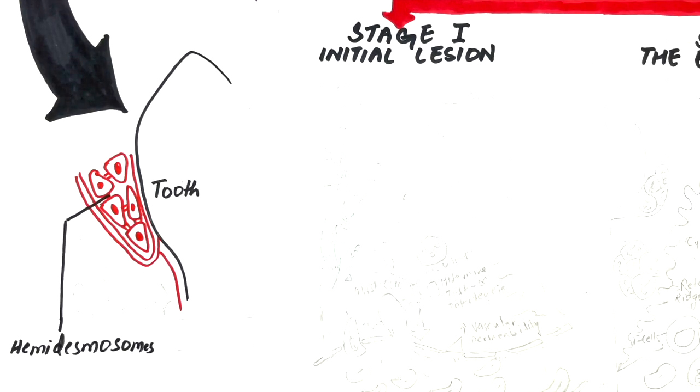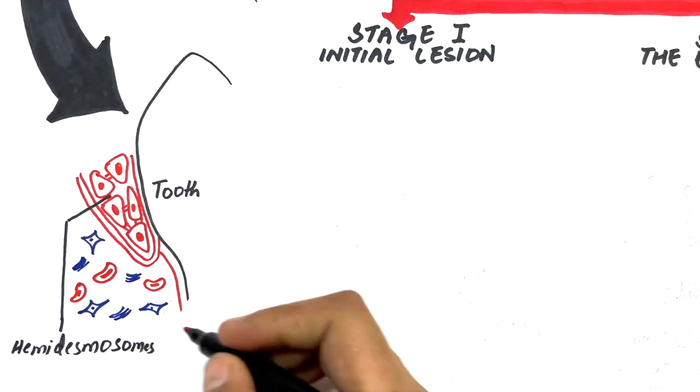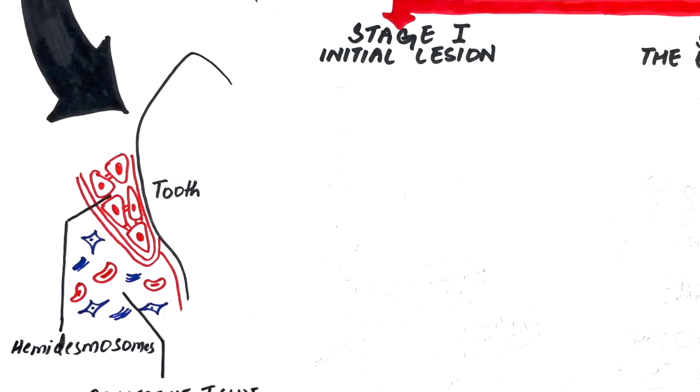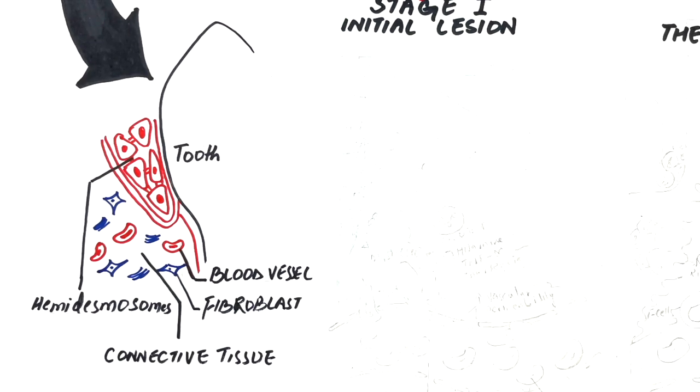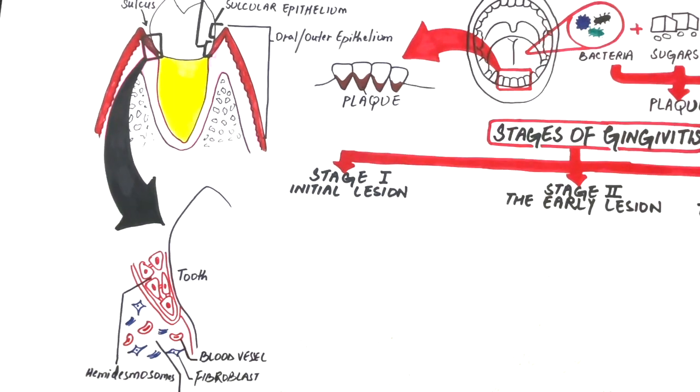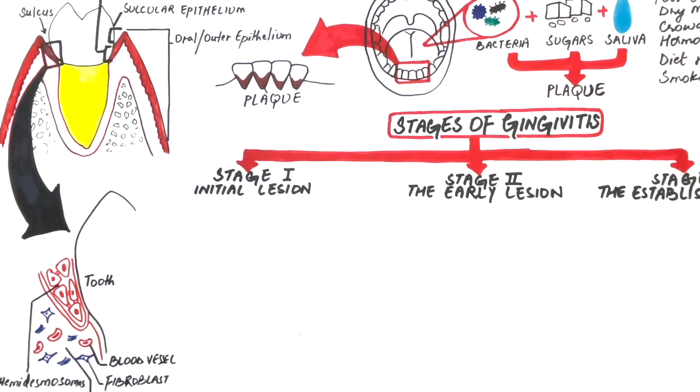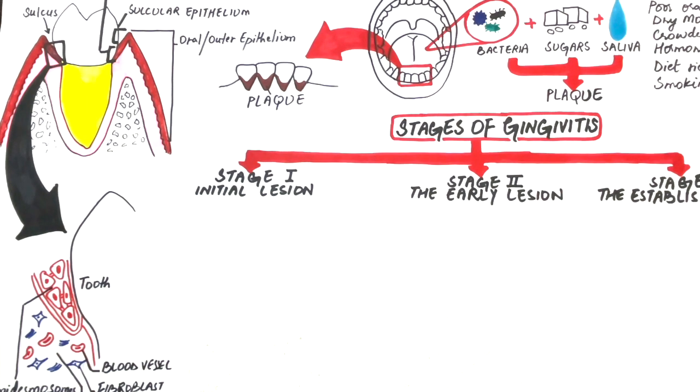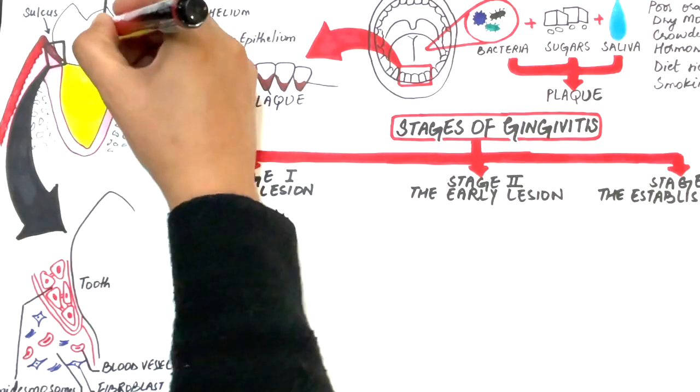Hemidesmosomes in the junctional epithelium possess wider intercellular junctions, hence allowing movement of bacteria and their toxins from the underlying connective tissue into the gingival sulcus. The cells of the junctional epithelium also allow movement of bacteria and their toxins from the dental plaque to reach the underlying connective tissue, hence initiating a disease process. Now let's zoom in this area to look at the stages of gingivitis.